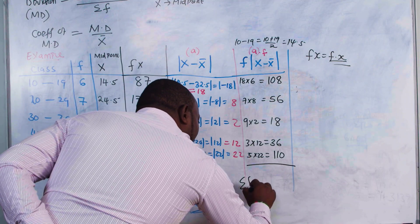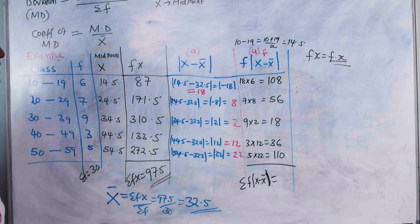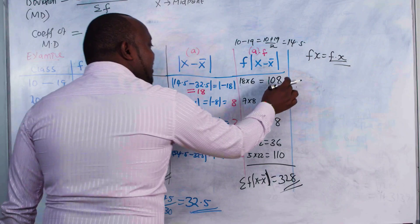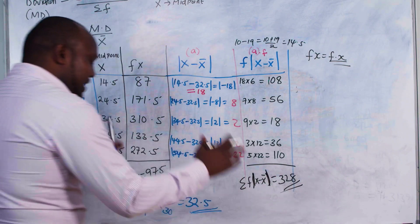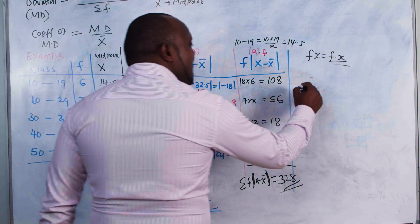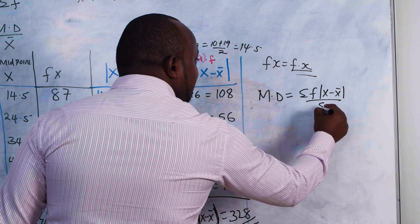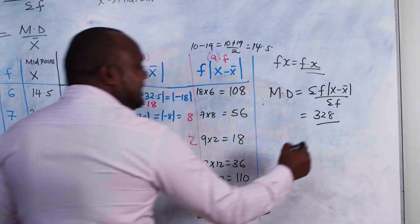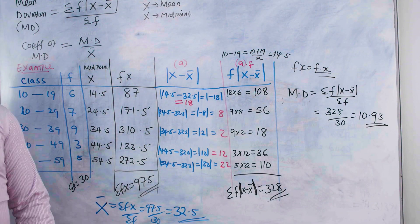The summation of f|x − x̄| = 108 + 56 + 18 + 36 + 110 = 328. Now, mean deviation = summation of f|x − x̄| / summation of f = 328 / 30 = 10.93 recurring.